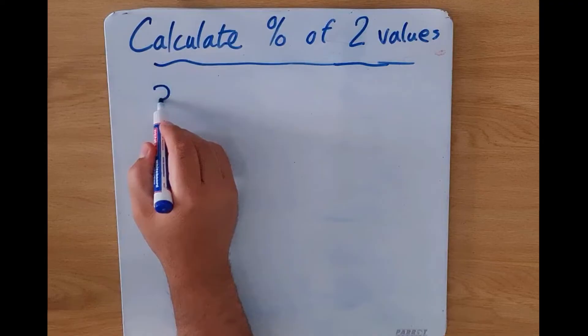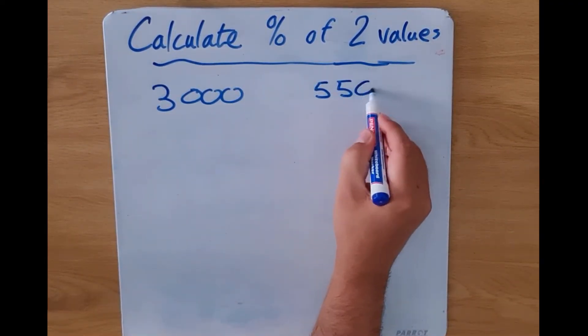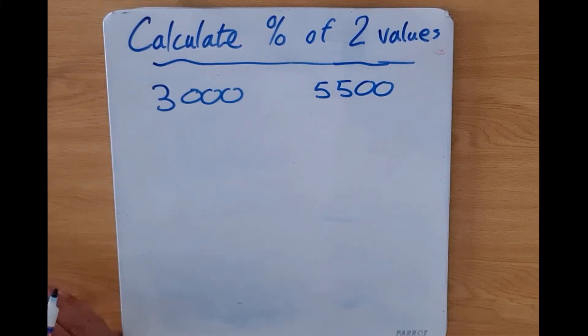What percentage is 3000 out of 5500? So they want us to look at that percentage. What are we going to do? We need to express it as a fraction. Do we have a fraction here? No we don't.